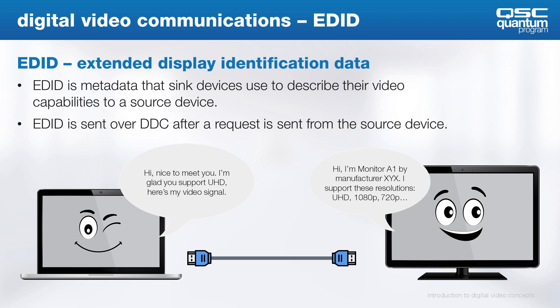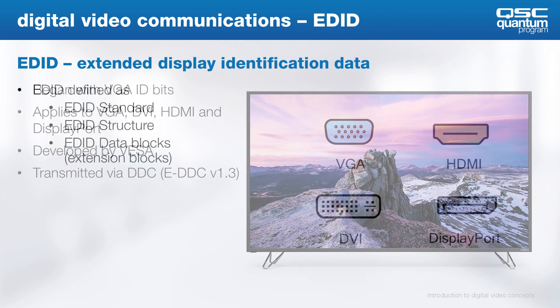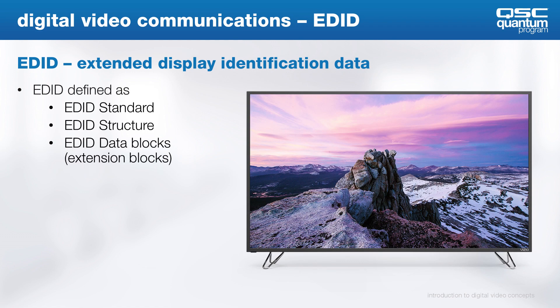The EDID carries the preferred resolution, which is typically what the source will output. EDID started out with VGA and then moved on to DVI, HDMI, and DisplayPort. It was developed by VESA, and it's transmitted today over the EDDC — but we still call it DDC. There are EDID standards, structure, and data blocks. When speaking about EDID, it's good to keep these in mind so you don't get confused.